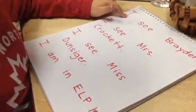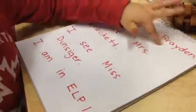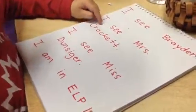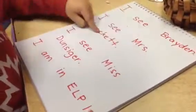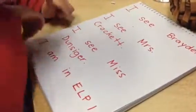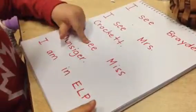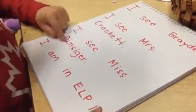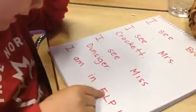So can you read the whole one from the very top with your finger? I see Raven, I see Miss Rocket, I see Miss Gunsinger, and I am in the LT1.